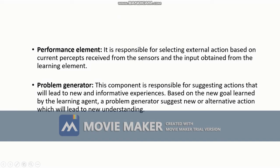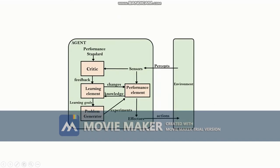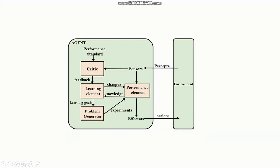This is the diagram of a learning agent. Perceptions are received from the environment using sensors. Based on the performance standard, the critic gives feedback to the learning element. The learning element and sensors both provide input to the performance element, which then performs actions using the effectors. The learning element also provides input to the problem generator, which introduces new experiments or problems and can suggest additional actions to the performance element.